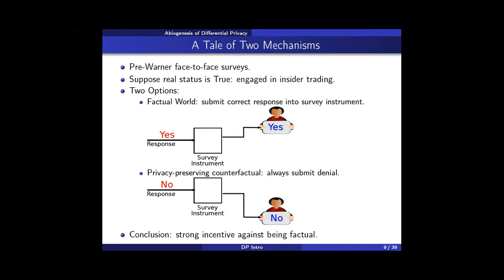Let's analyze the privacy guarantees in more detail. Before Warner, a respondent who engaged in insider trading had two choices: answer truthfully (the factual world) or always deny insider trading (the privacy-preserving counterfactual world, where their response does not incriminate them). If we don't trust the interviewer, we have a strong incentive to avoid being factual.